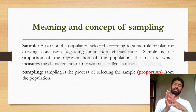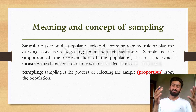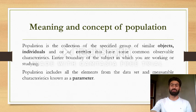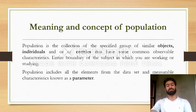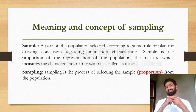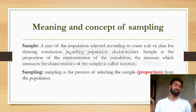The measure which measures the characteristics of a sample is called statistics. Statistics is the measure of the sample, just as parameter is the measure of the population. So: statistics is used for sample characteristics, and parameter is used for population characteristics.